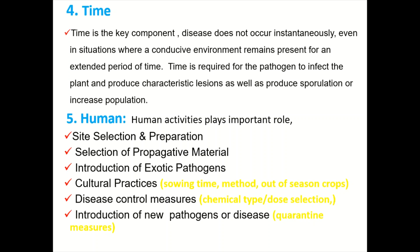Number five, human activities play an important role. For example: site selection and preparation — ensuring the site selected for planting is good and the soil is well prepared; selection of propagated material such as seeds, suckers, and layers to make sure these are not infected; introduction of exotic pathogens; cultural practices like sowing time, sowing methods, and out-of-season crops; proper employment of disease control measures including appropriate chemical selection; and prohibiting the introduction of new pathogens through quarantine measures.